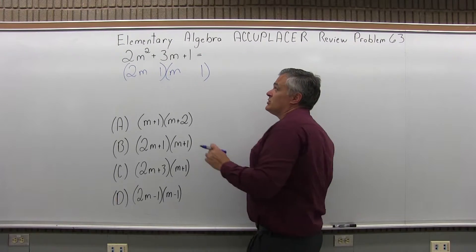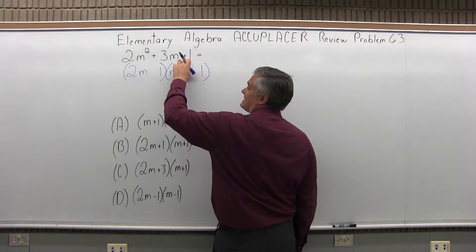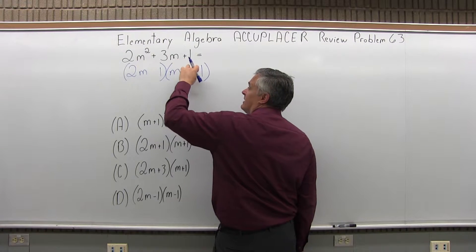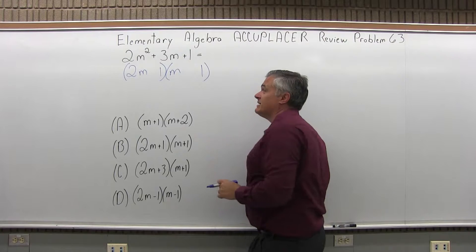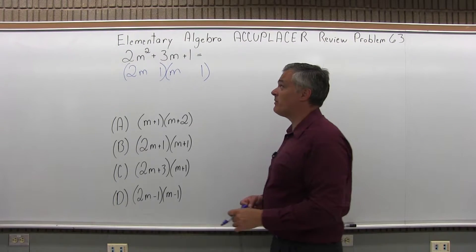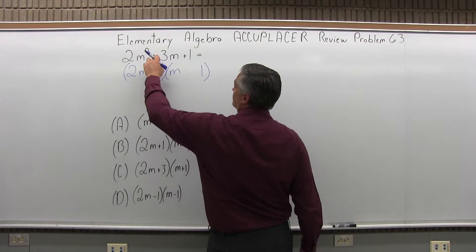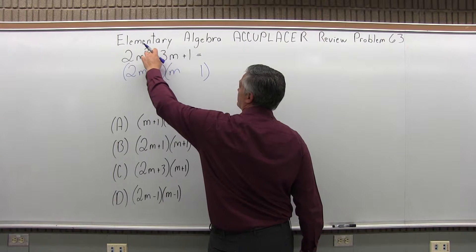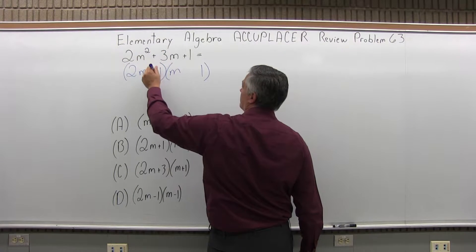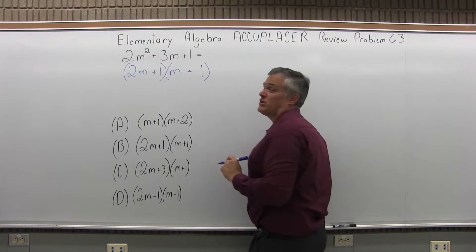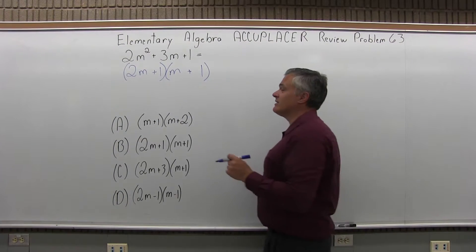I just have to choose the signs. Because the second sign is positive, both those ones should have the same sign, either plus 1 and plus 1 or minus 1 and minus 1. The same sign should be whatever the middle sign is, the one in front of the 3m which is a plus. So they should both be plus. Now we can check that to verify it.